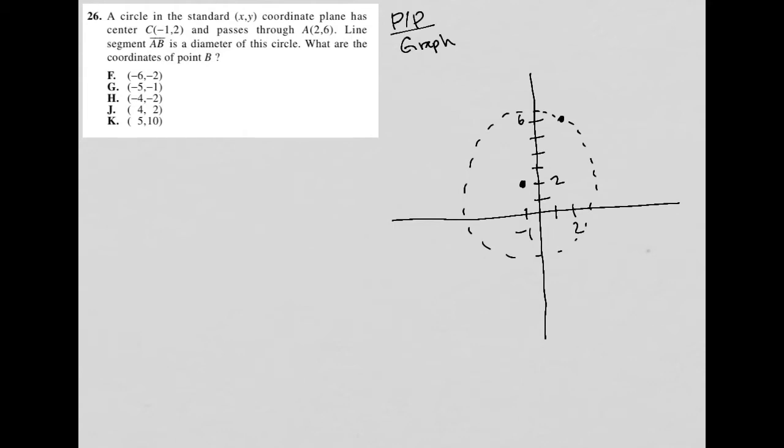Oh, I'm sorry, we are told. We are told that this (2, 6) is point A. So then if (2, 6) is A, then my B must be over here on this side of the circle.